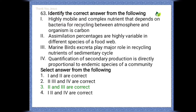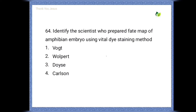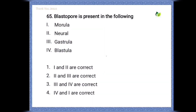Identify the scientist who prepared the fate map of amphibian embryo using vital dye staining method. Options are Vogt, Dalcq, Colson. The correct option is Vogt.